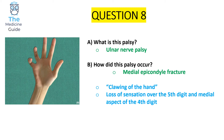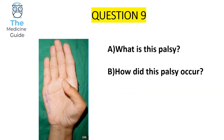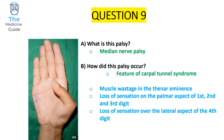This patient is presenting with a median nerve palsy, commonly a feature of carpal tunnel syndrome. Patients present with muscle wastage in the thenar eminence — at the base of the thumb — and loss of sensation on the palmar aspect of the first, second, and third digits, plus the lateral aspect of the fourth digit. Median nerve palsies and carpal tunnel syndrome are very high yield topics in medical school final exams.